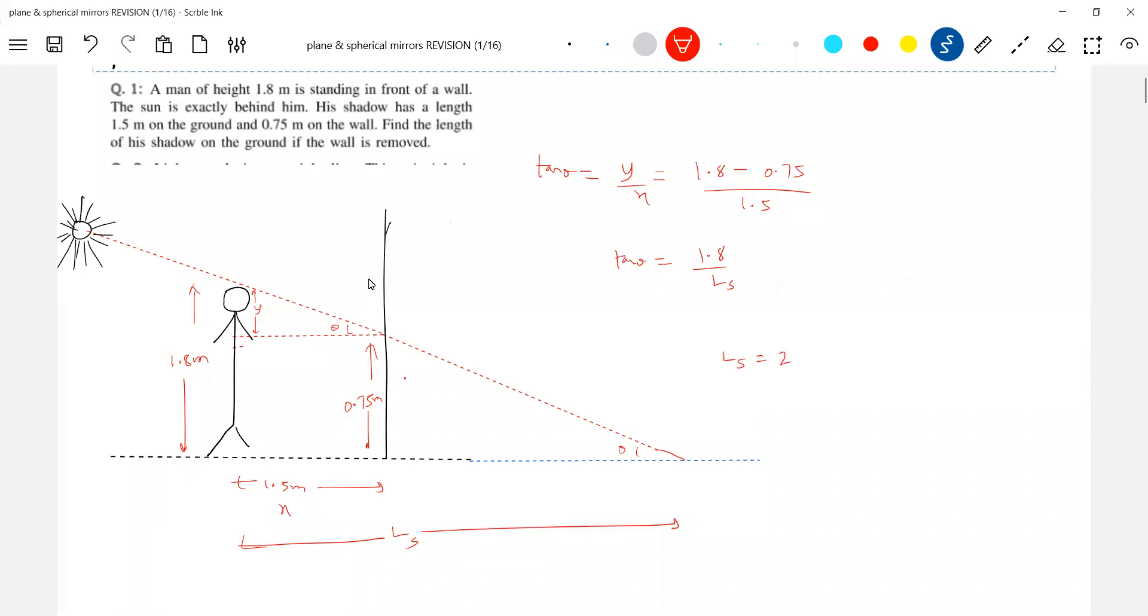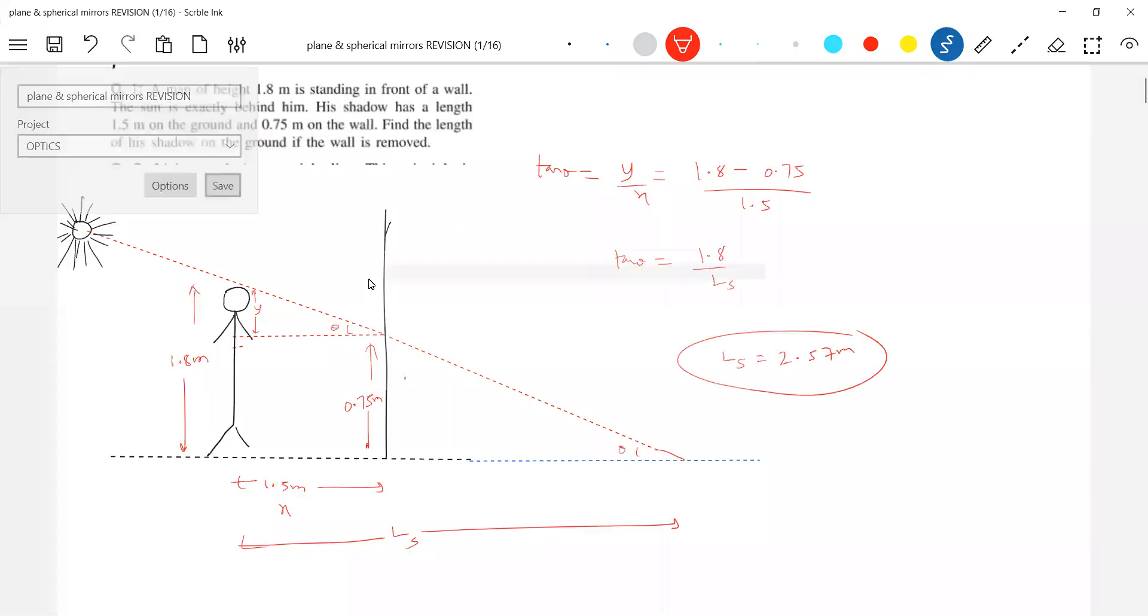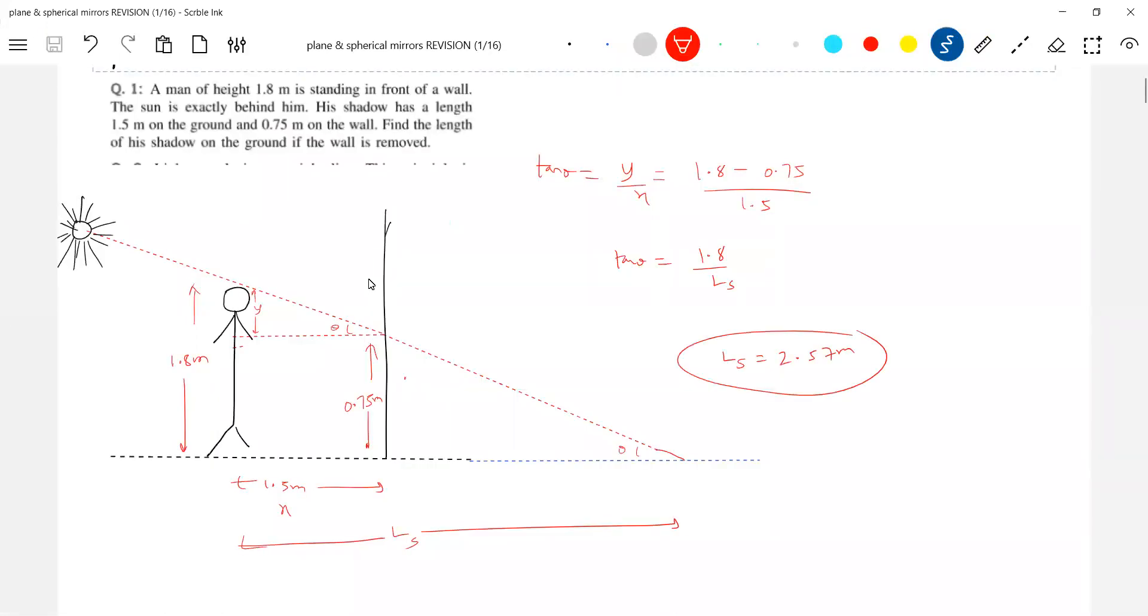I'll write the answer later on, you check the calculation. These are the simple sums that can be asked in exams. See, routine problems we know - like shadows, wall, if mirror is there, what will be the length of the shadow in the mirror, without mirror. Two, three problems you work out on shadow.